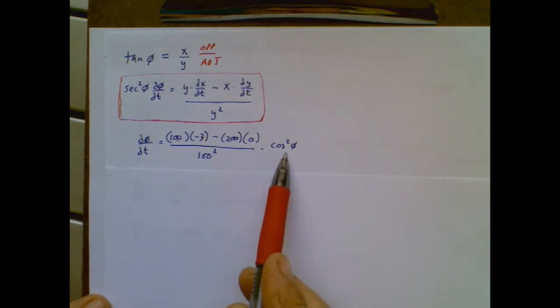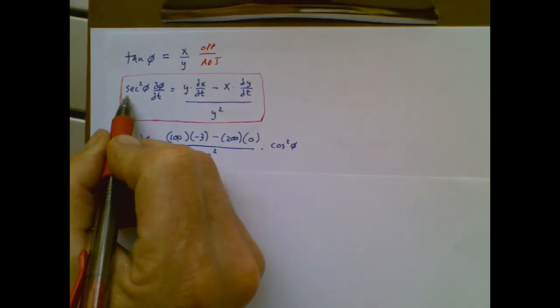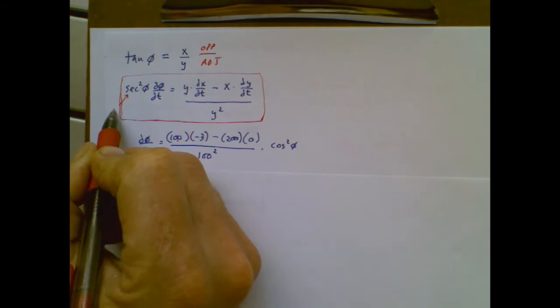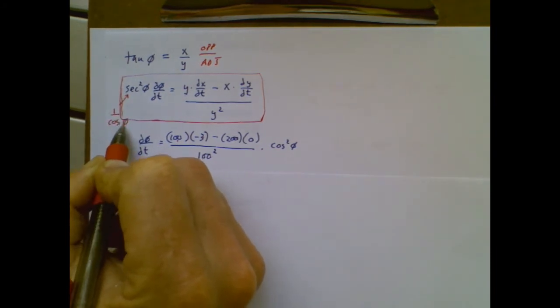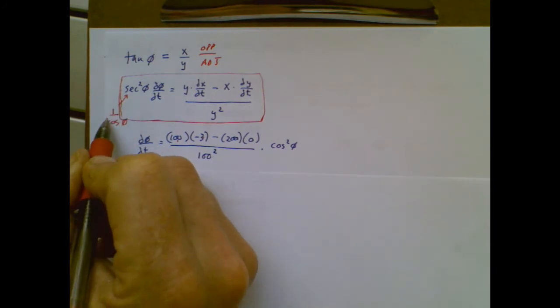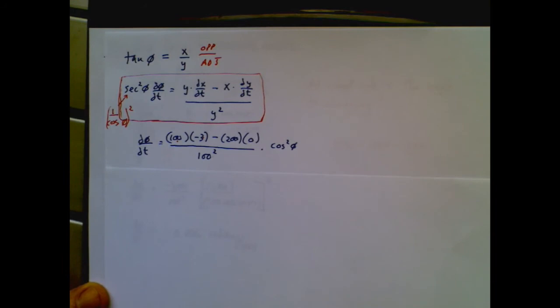But where is this cosine coming from? Here's the deal. Secant on the left-hand side is really 1 over cosine. So secant squared is 1 over cosine squared. That's a little messy.